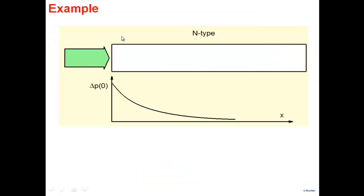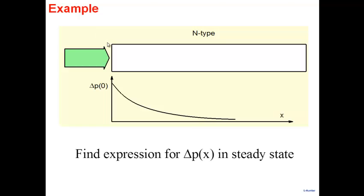From next lecture we'll work with Poisson's equation. But today, let's practice the continuity equation. The problem: I have a piece of n-type silicon. Light of very short wavelength is incident from the left. Very short wavelength means a very high absorption coefficient, so all the light gets absorbed only at the surface.